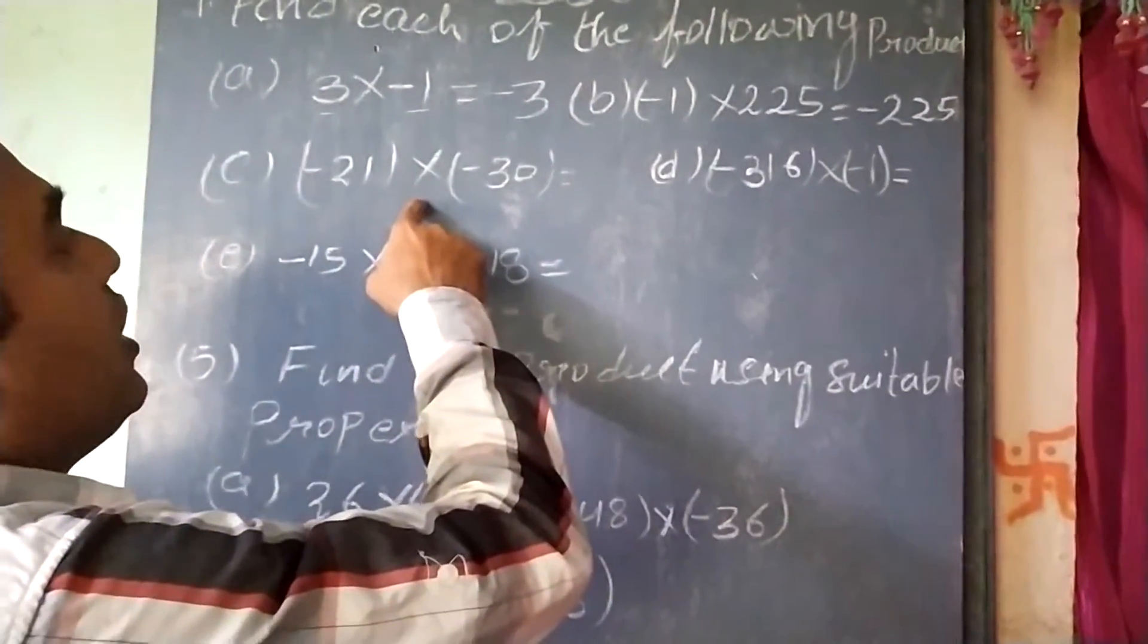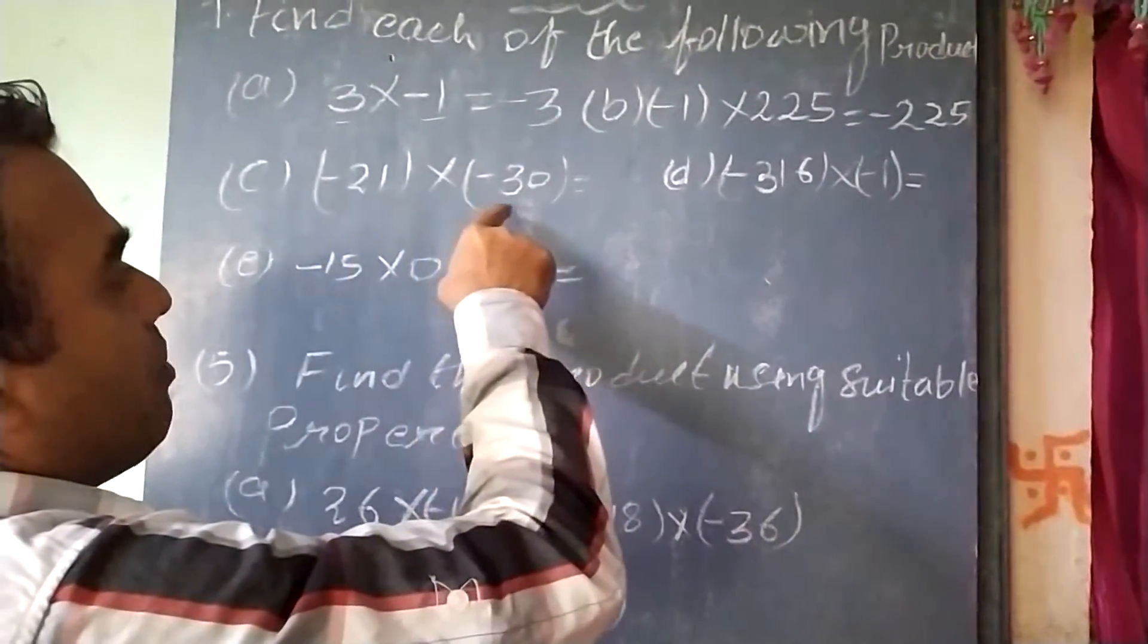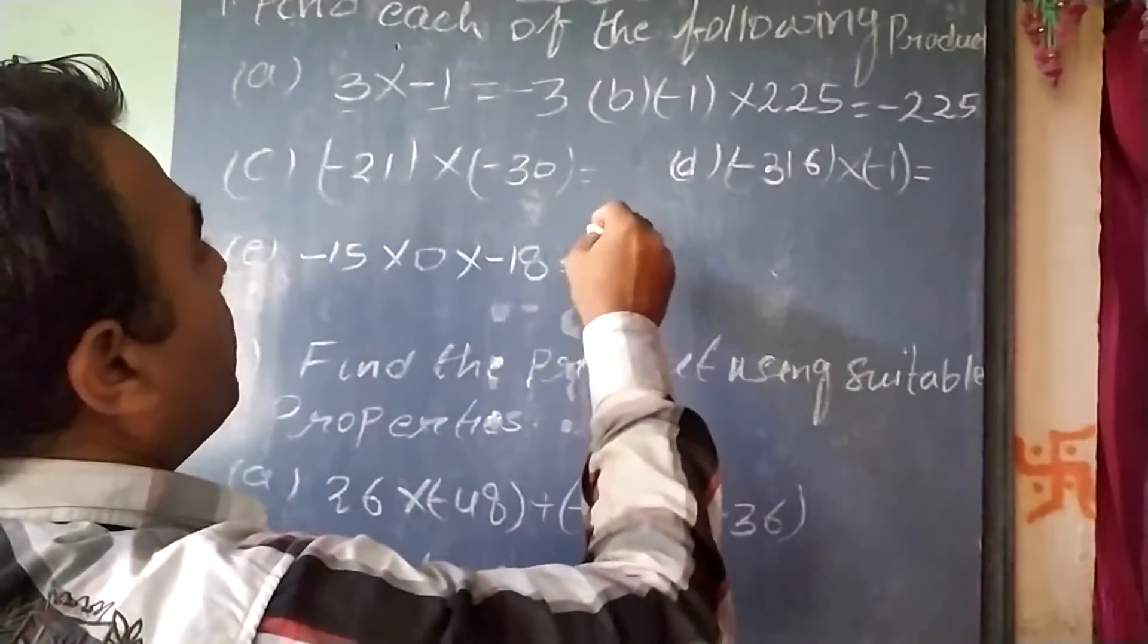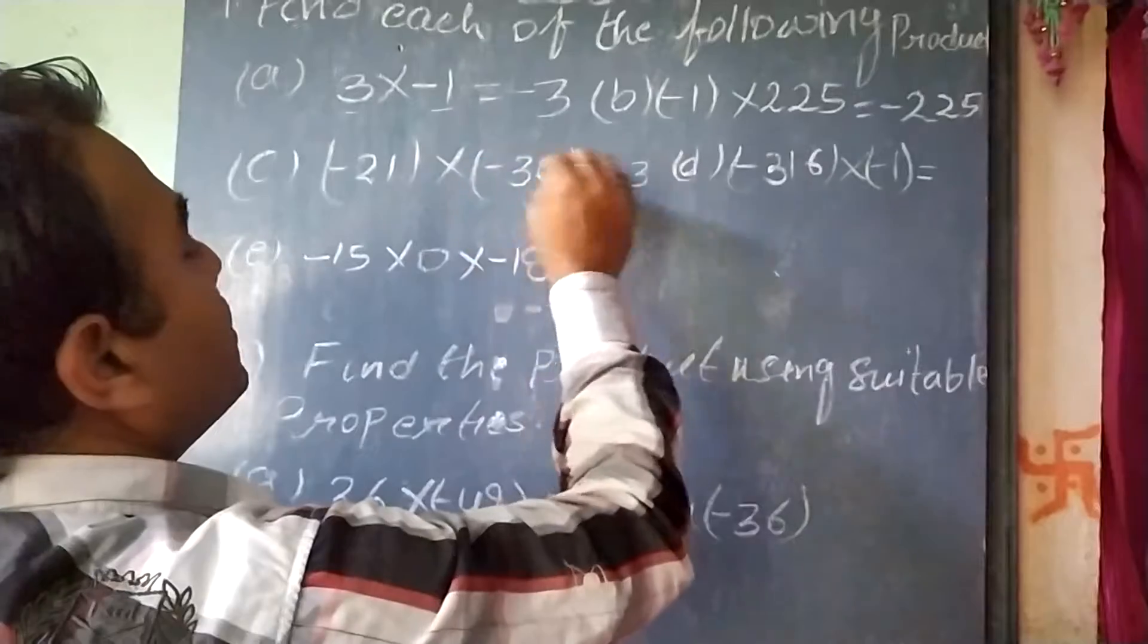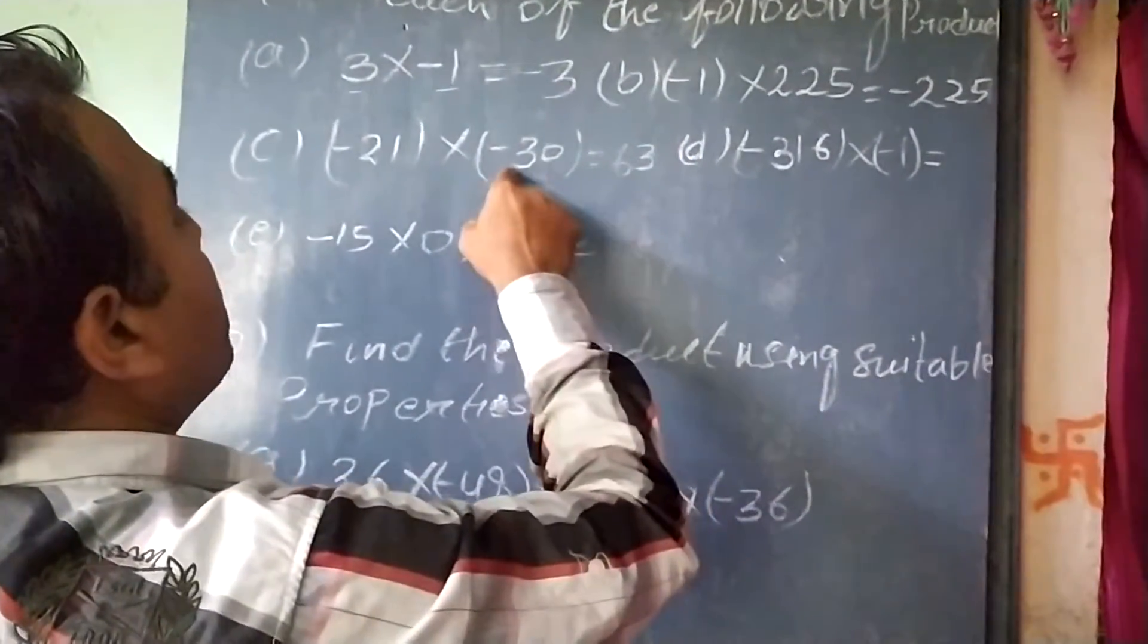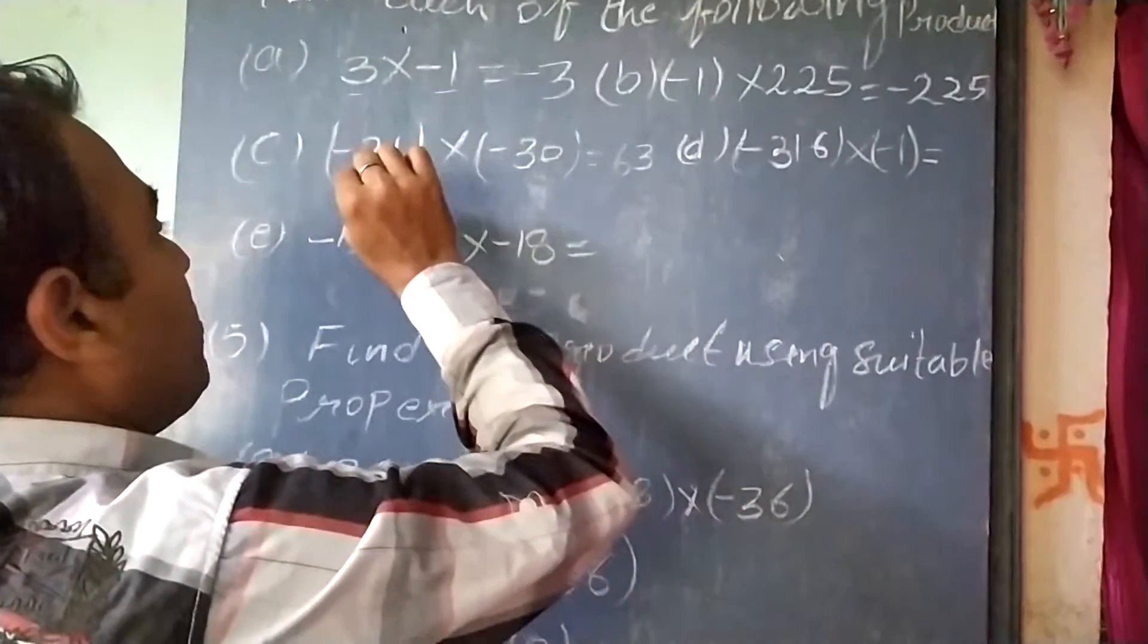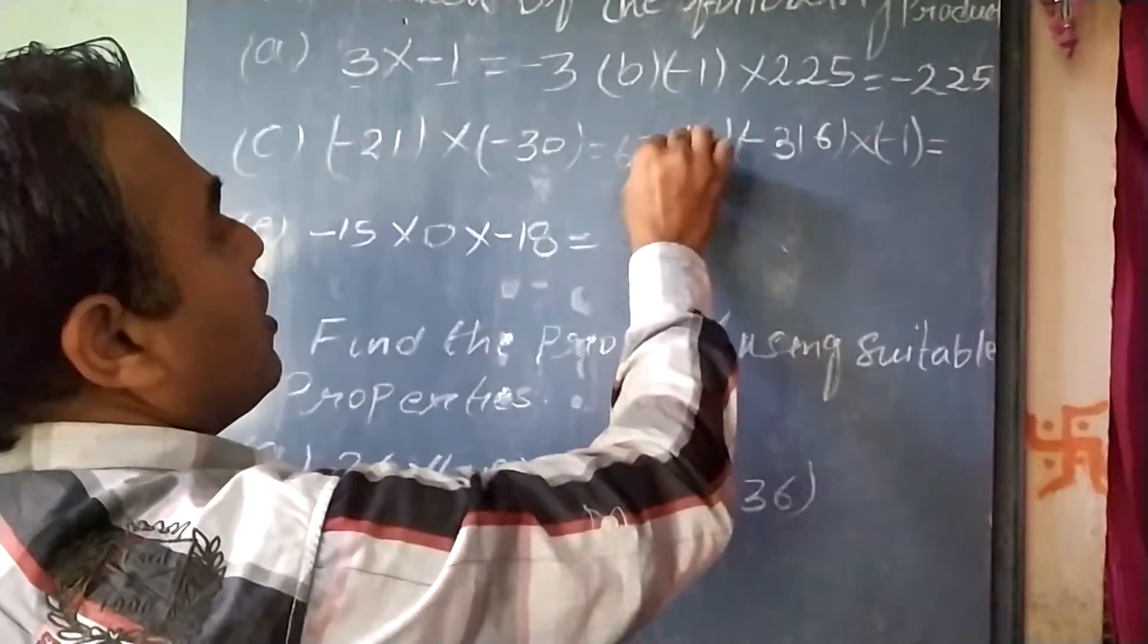Here you can see minus 21 and minus 30. When you multiply 21 by 30, you will get 630. As it is minus times minus, minus multiplied by minus will be positive, that is a positive number.